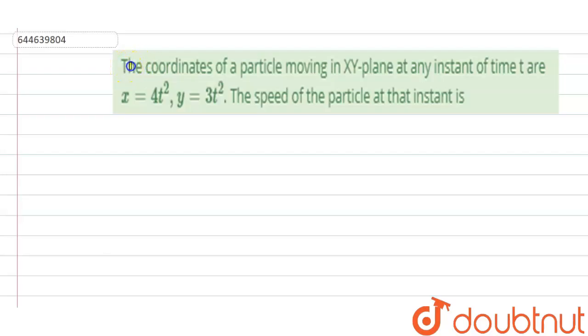Hello students, so the question is the coordinate of a particle moving in xy plane at any instant of time t are x equals to 4t square, y equals to 3t square. The speed of the particle at that instant is.